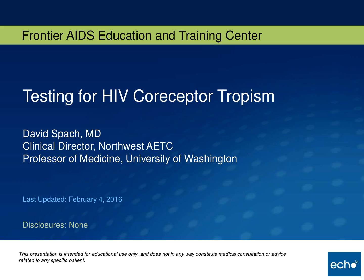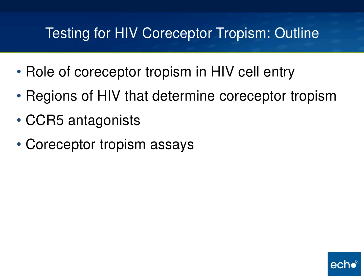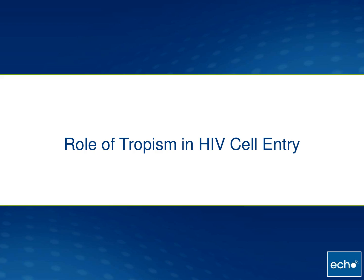Several times in our sessions, the issues of HIV co-receptor tropism has come up. So what I'm going to talk about today is testing for HIV co-receptor tropism. Specifically, I'd like to initially discuss the role of co-receptor tropism in HIV cell entry, then move into the specific regions of HIV that determine co-receptor tropism, then the practical applications — the CCR5 antagonists, specifically Maraviroc — and finally the co-receptor tropism assays, including both phenotype and genotype types.